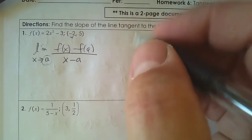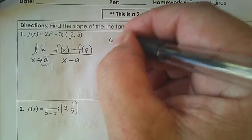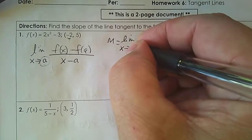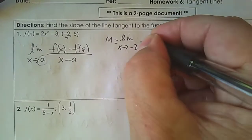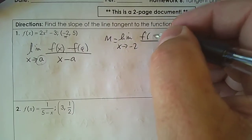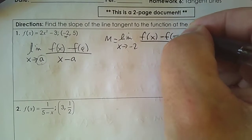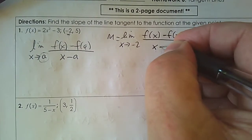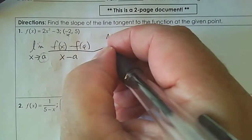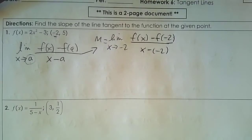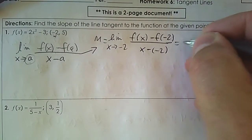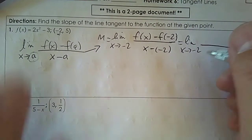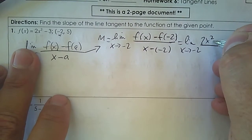Let's begin. To find the slope, I'm going to use that easier formula. So I'm going to go as x approaches negative 2 — I just need the x value. In the numerator it will be f(x) subtract f(-2), and the denominator is x subtract negative 2. So f(x) is just 2x² subtract 3.